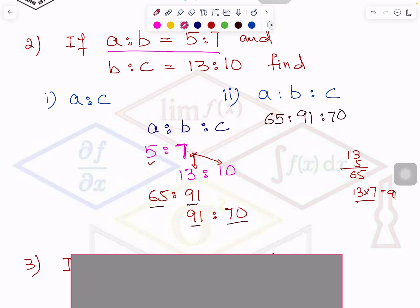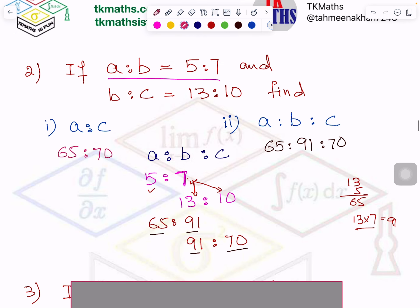And for this part I can write 65 is to 70. You know why I cannot just pick up this value of A to write here and this value of C to write here? Do you know why? Absolutely right. Because B is not same right now. When B is same, then you can equate them.